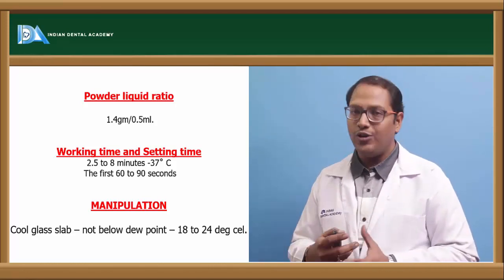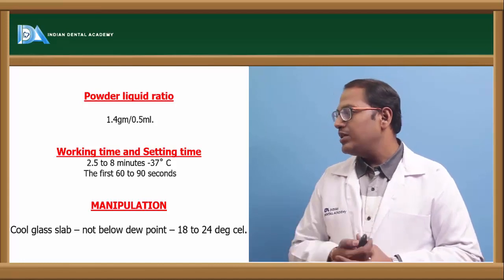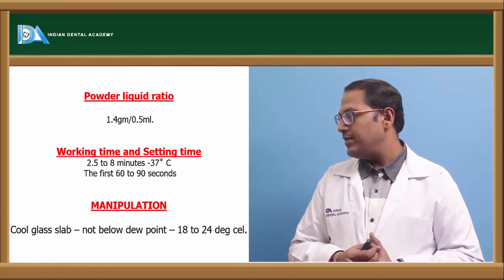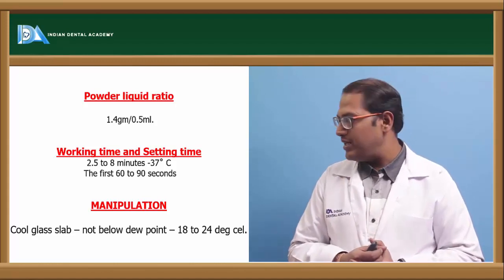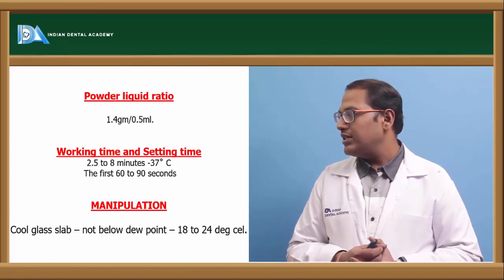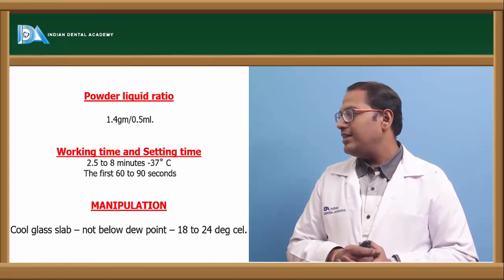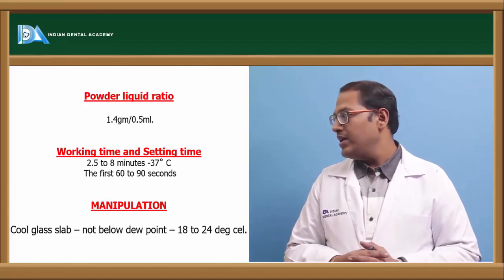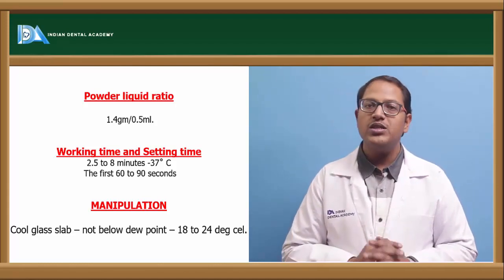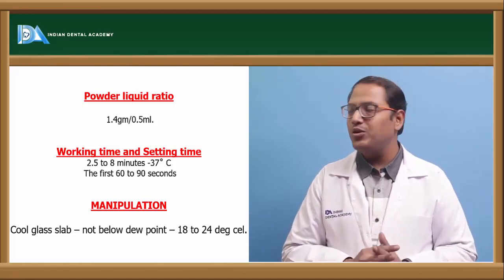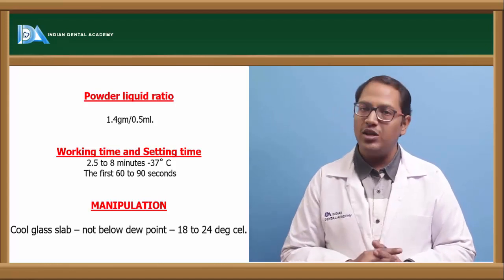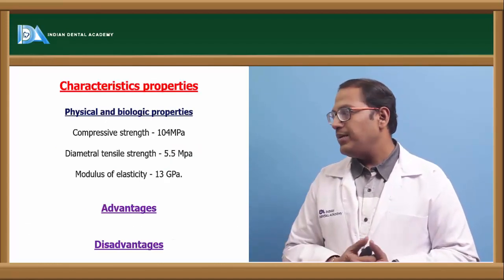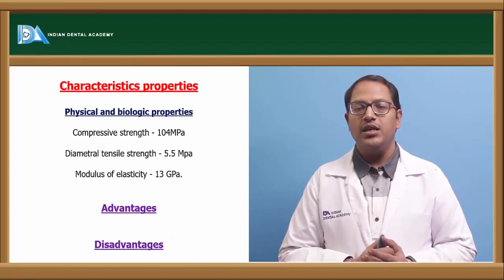The working time of zinc phosphate cement is 2.5 to 8 minutes at 37°C, with the first 60 to 90 seconds remaining stable. The powder-liquid ratio is 1.4 grams per 0.5 mL of liquid.